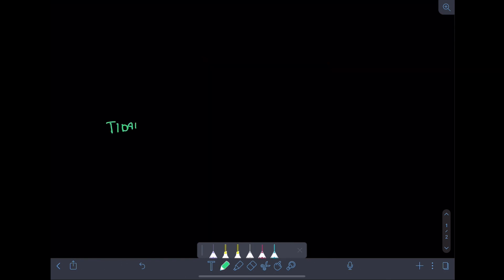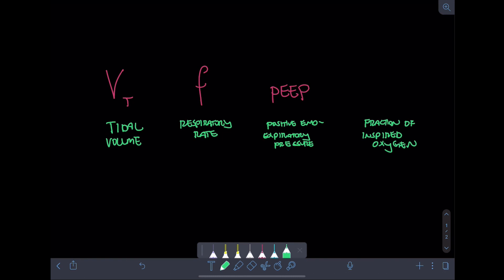So the main four settings for a volume control ventilated patient are tidal volume, sometimes represented as VT, respiratory rate, which is represented as RR or f for frequency, PEEP, or positive end expiratory pressure, and FiO2, which means fraction of inspired oxygen.